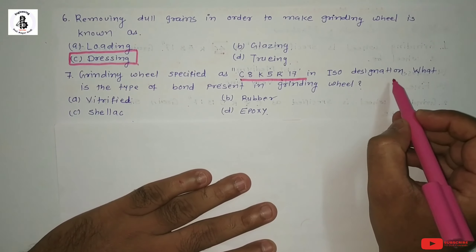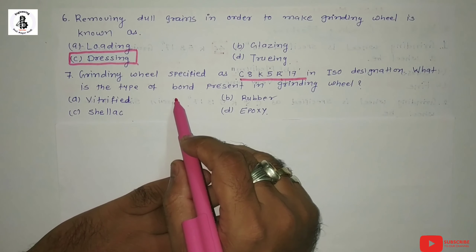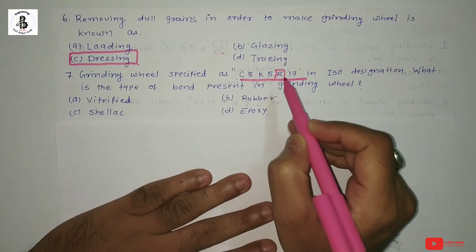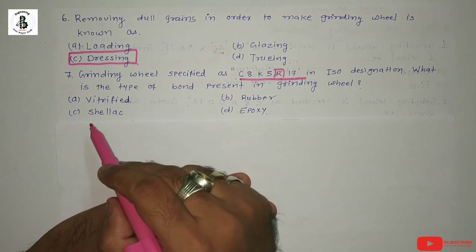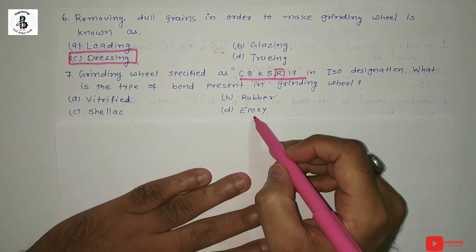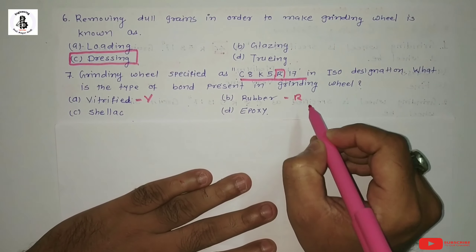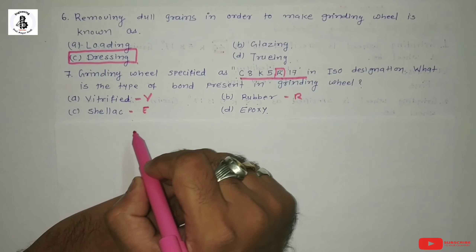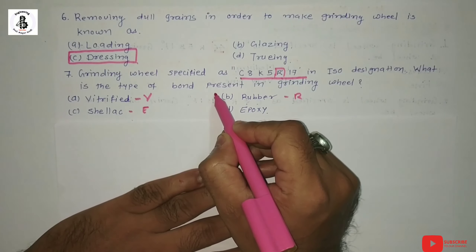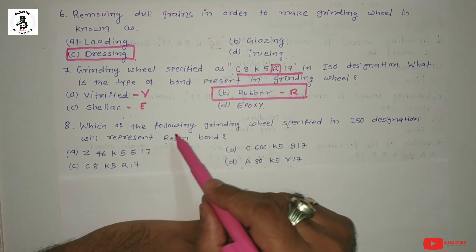Question 7: A grinding wheel is specified as C8K5R17 in ISO designation. What type of bond does this grinding wheel represent? The fifth digit in the specification indicates the type of bond. Options: A: vitrified, B: rubber, C: shellac, D: epoxy. Capital V indicates vitrified, R indicates rubber, E indicates shellac. Since the fifth character here is R, the answer is option B: rubber.